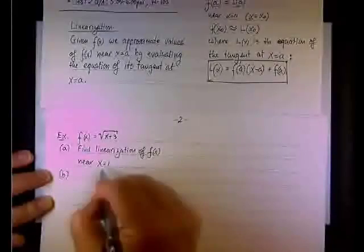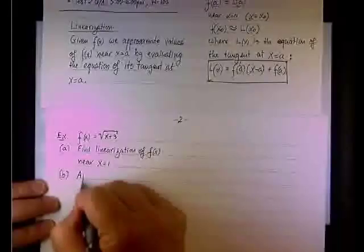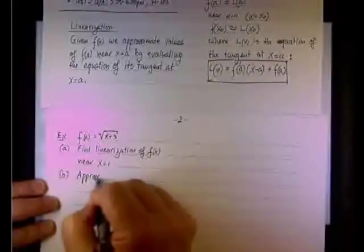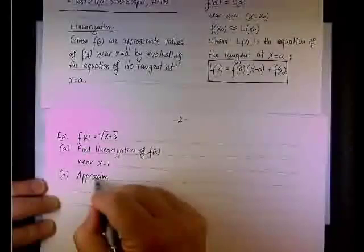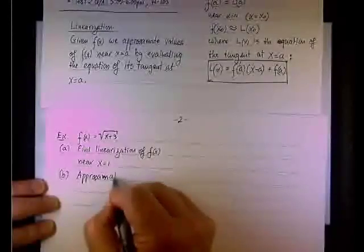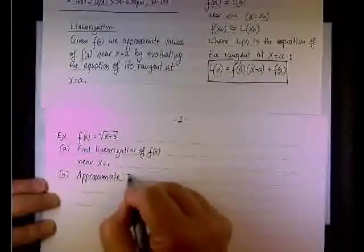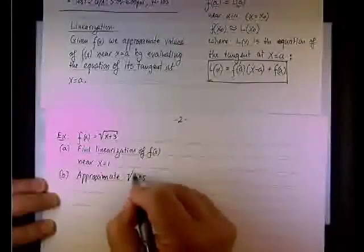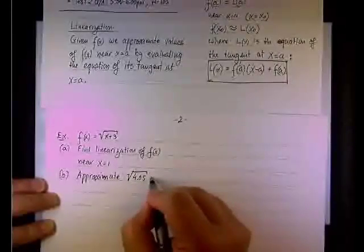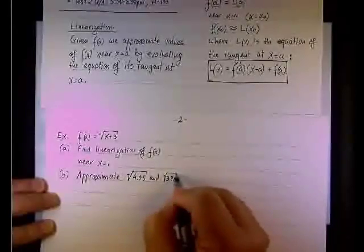Part B, use the linearization to approximate the following values. We'll approximate the square root of 4.05 and the square root of 3.98.